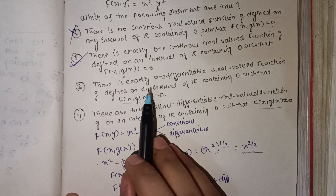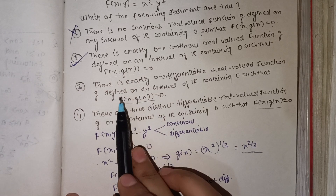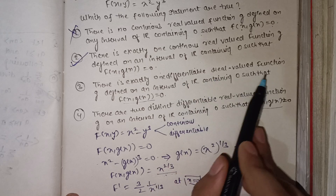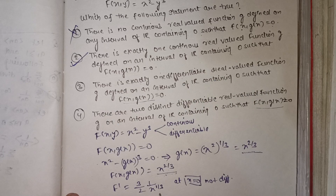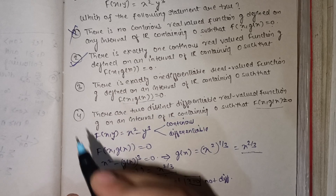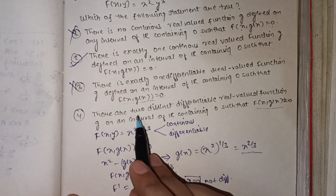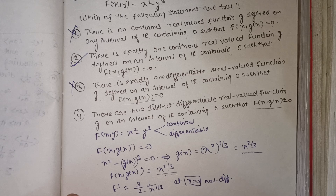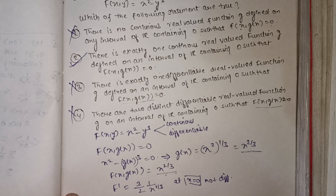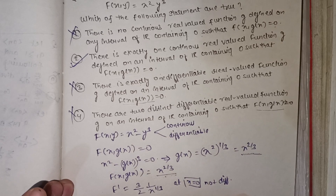Since g(x) is not differentiable at zero, the option claiming exactly one such continuous function exists is also false. There is not only one distinct function satisfying the condition, so the second option is true — this is the solution to the question.